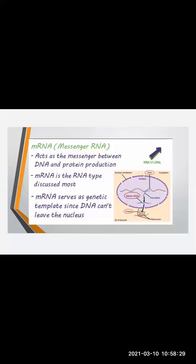The function of mRNA is that it acts as a messenger between DNA and protein production. mRNA is the most discussed type of RNA and serves as a genetic template since DNA cannot leave the nucleus. RNA is the hard worker in protein synthesis. RNA is also the copy or transcription of DNA, meaning it is a copy made from DNA, and whatever hard work is done in protein synthesis is done by RNA.